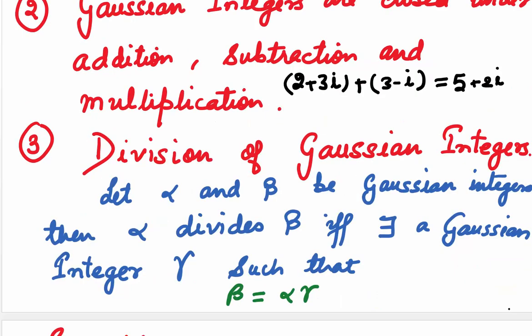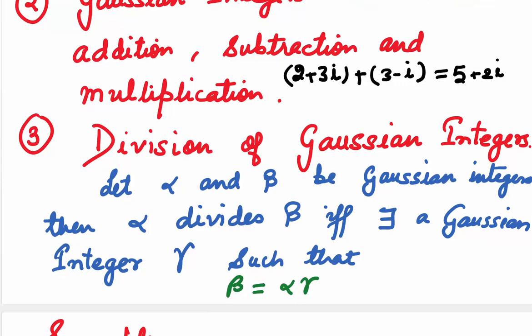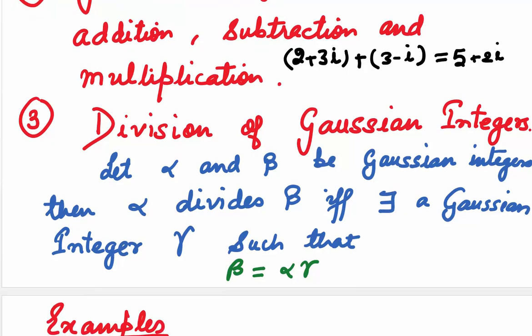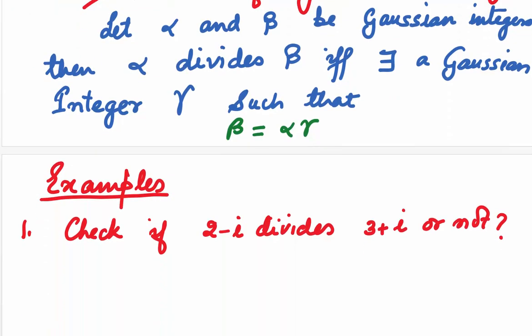But the division of Gaussian integers is not always possible. Let alpha and beta be Gaussian integers. Then alpha divides beta if and only if there exists a Gaussian integer gamma such that beta equals alpha times gamma.